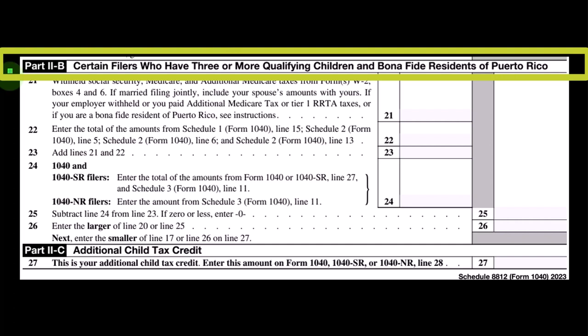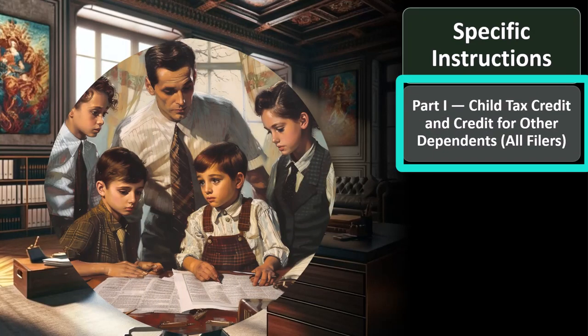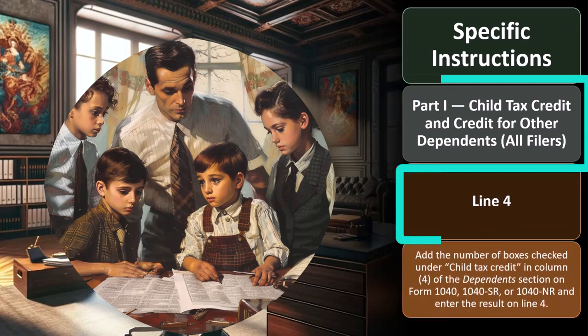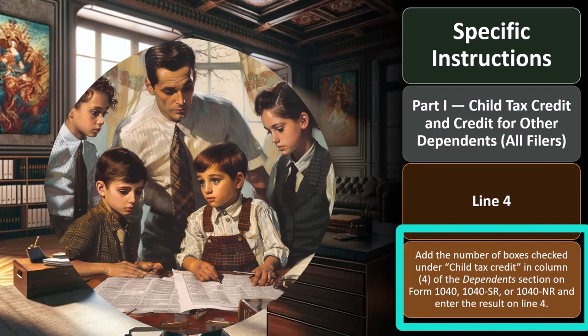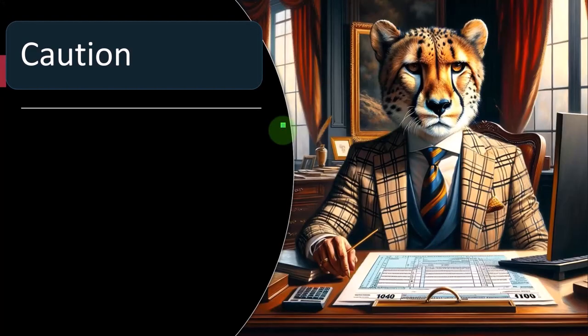Part 2B covers certain filers who have three or more qualifying children and bona fide residents of Puerto Rico, and Part 2C covers the additional child tax credit. For Part 1, line 4: add the number of boxes checked under 'child tax credit' in column 4 of the dependents section on Form 1040, 1040-SR, or 1040-NR. Usually we use tax software, entering dependents into the system — if they qualify for the child tax credit, that box is checked on page one of Form 1040.